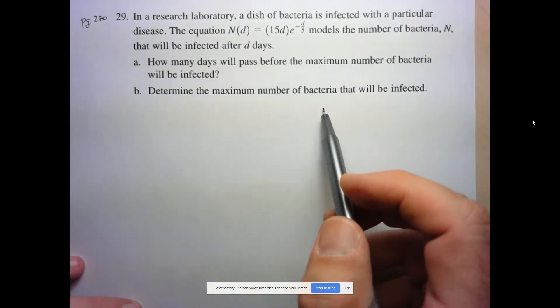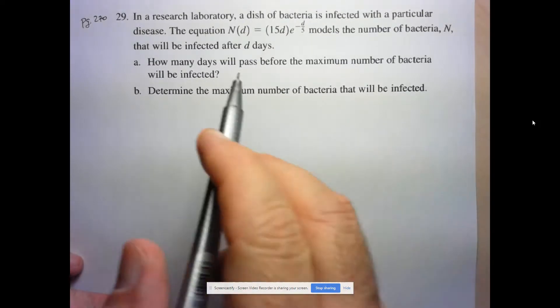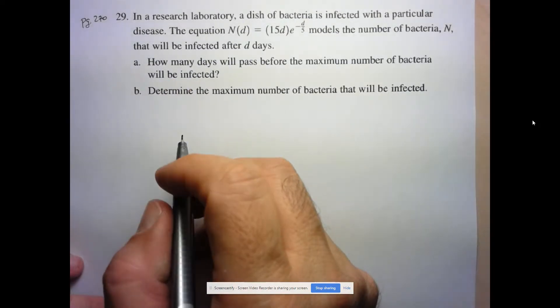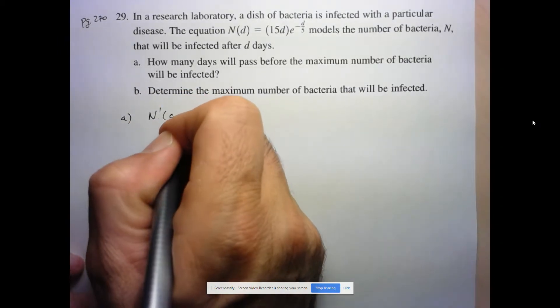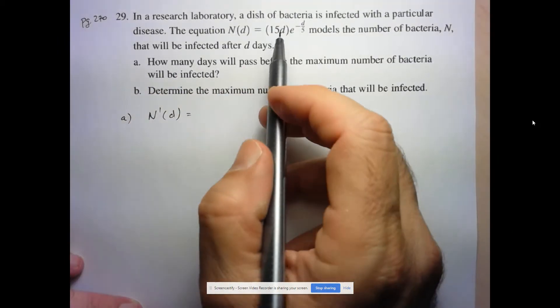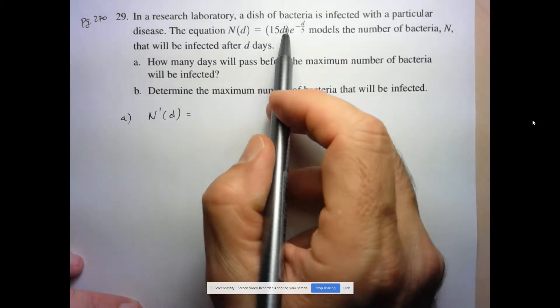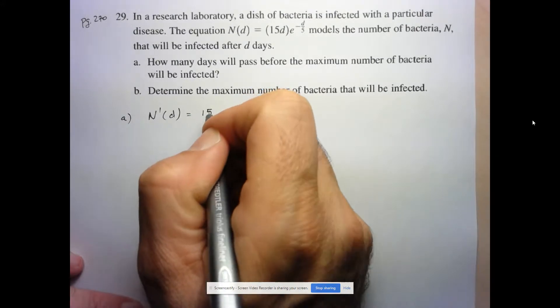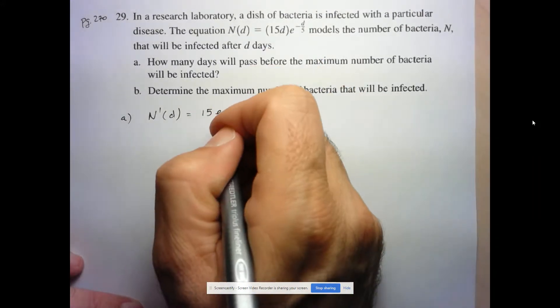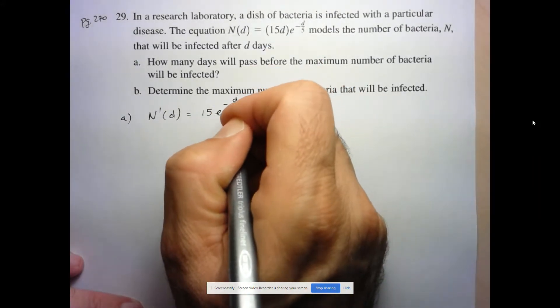Since we're looking for a maximum, we're going to be taking the derivative and finding the critical points. So let's start with that. The derivative of N with respect to D is going to be given by, well, we're going to have to use the product rule here.